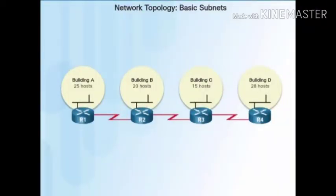In the network topology basic subnets example, we have 25 hosts on Router 1, 20 hosts on Router 2, 15 hosts on Router 3, and 28 hosts on Router 4.